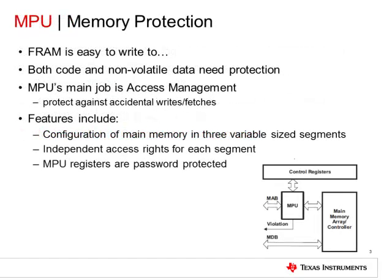FRAM is very easy to use and modify. This increases the likelihood of an unintentional erase or overwrite when application code performs an illegal access, for example during a pointer overflow. We recommend planning and setting up memory segments as read, write, or executable prior to the start of application code. Access management settings for FRAM are set up using the memory protection unit, which allows the user to assign read, write, and execute accesses to specified areas of memory.